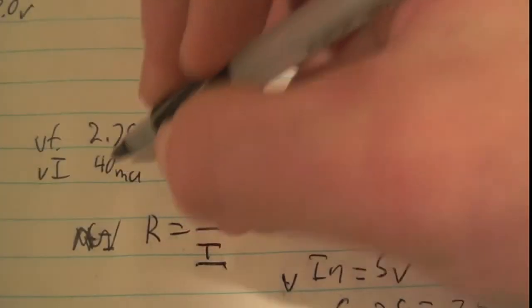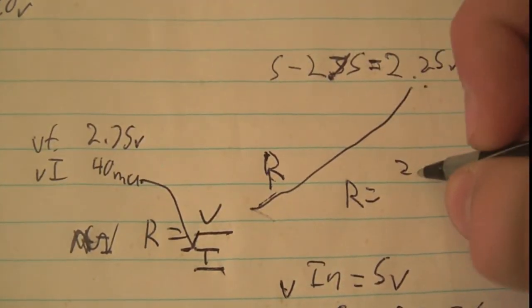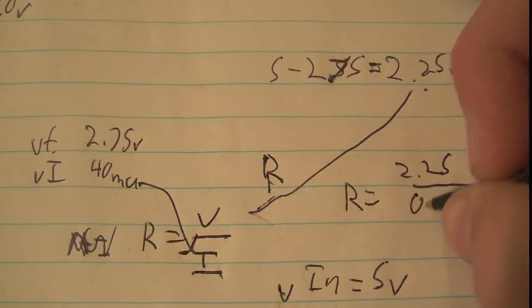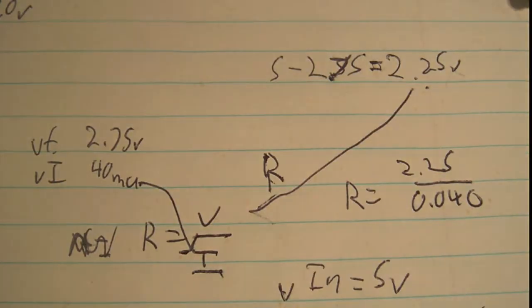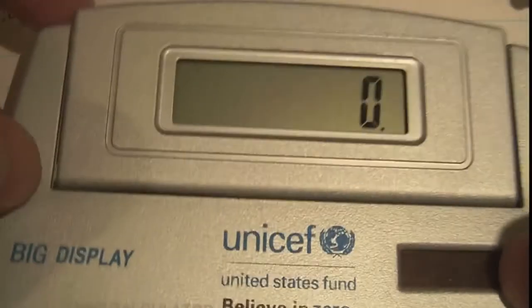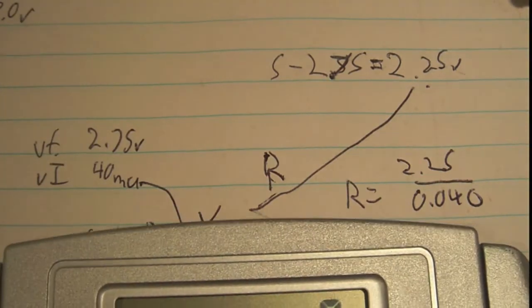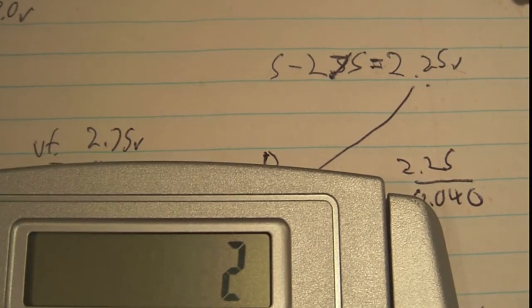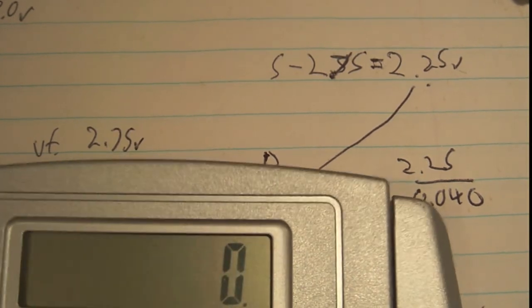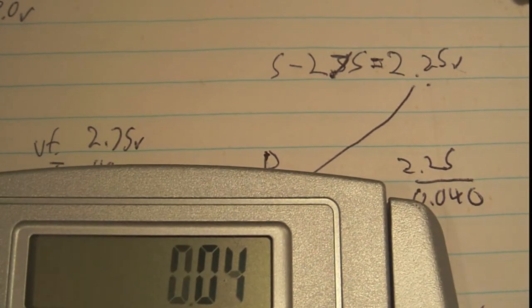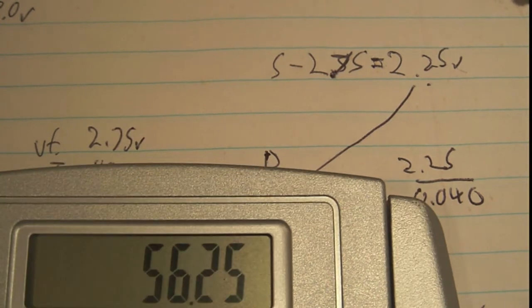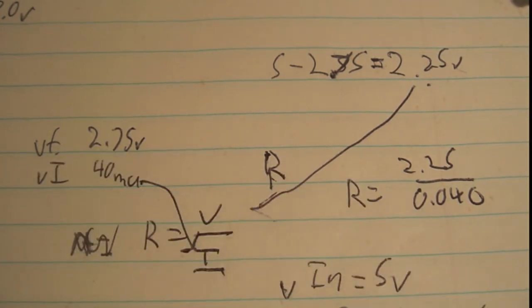So then our current is again going to be the same, so we're just going to plug 40 milliamps in for the current, so we're going to get resistance equals to 2.25 over 0.040. Get out my calculator, 2.25 divided by 0.040. That's going to give us a resistance of 56.25 ohms, and it just happens to be that there is a 56 in the E12 range.